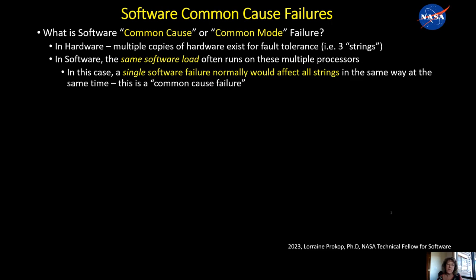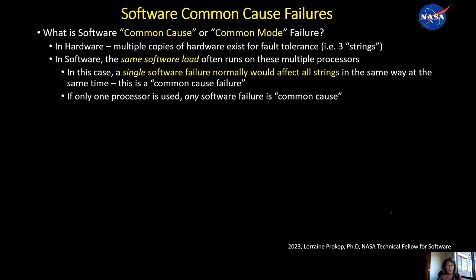But in software — and this is the distinction — the same software usually runs on all of those computers or all of those strings. So in this case, any single software failure can result in a common cause failure — in other words, take down all the strings or do the same wrong thing on all the strings.